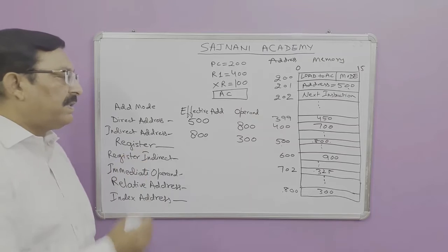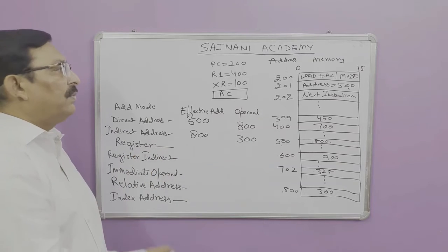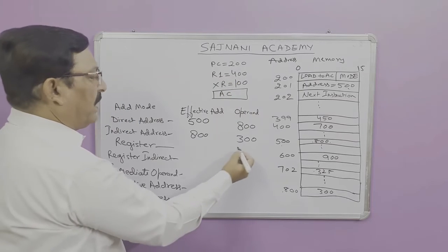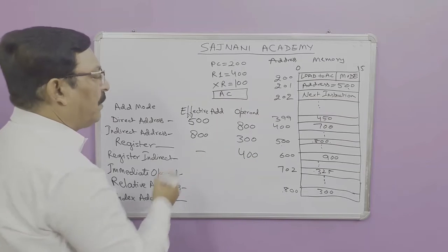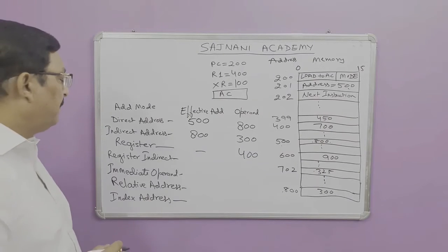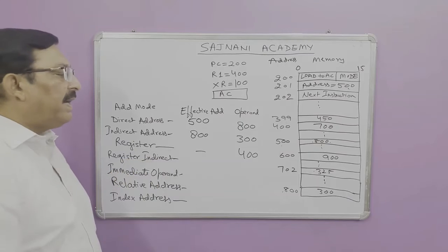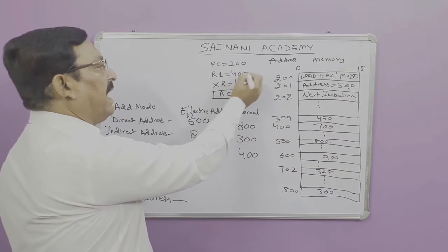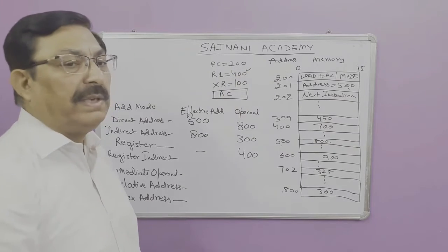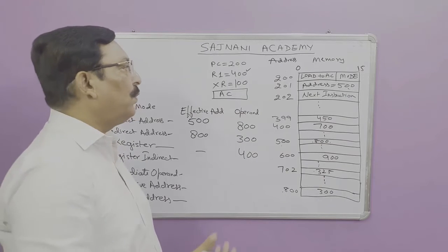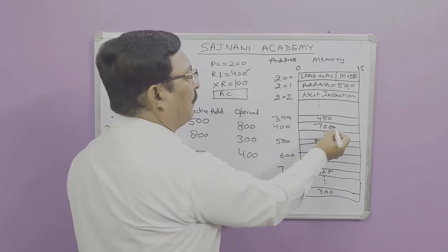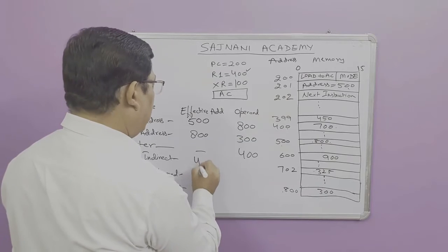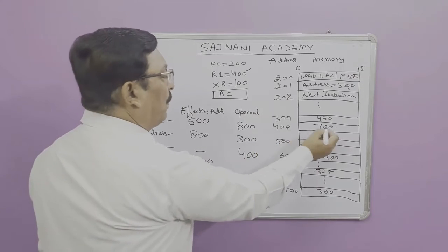In register mode, the register holds the direct value. Here R1 is 400, so 400 is the operand directly — there is no memory address involved. In register indirect mode, the value in the register (400) is the address of the operand. So at address 400 you find the value 700. The effective address is 400 and the operand is 700.